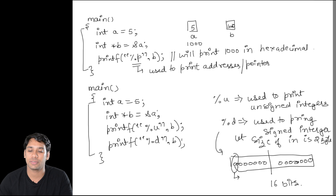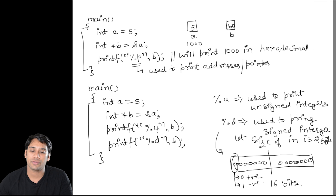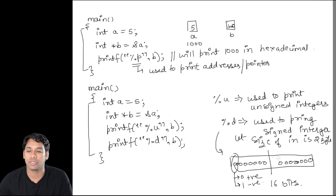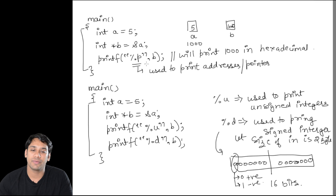If it is a positive integer, the last bit is 0, and if it is negative, the last bit is 1. If I use %u, that means I am printing an unsigned integer — all 16 bits can be used to represent the number. In case of signed integers, only 15 bits are used for the number and the last 1 bit identifies the sign.